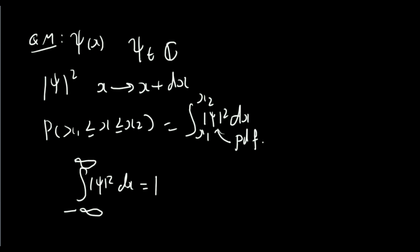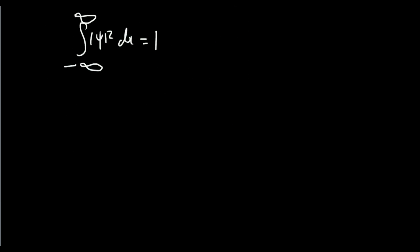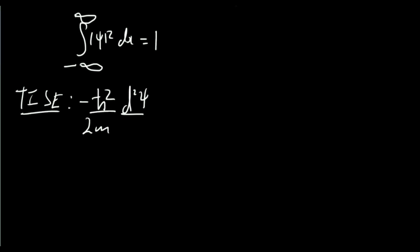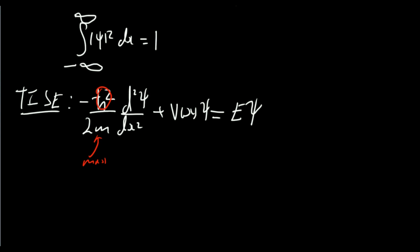In practice we'd like to actually be able to find psi for some given system. This is governed by the time independent Schrödinger equation, commonly called the TISE. This is minus h bar squared over 2m, d2 psi by dx squared, plus the potential energy of the system times psi, equal to the total energy of the system times psi. So h bar is the reduced Planck constant h over 2pi, m is the mass of the particle, V is the potential energy function, and E is the energy of the system.